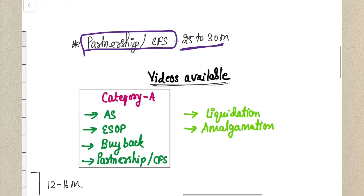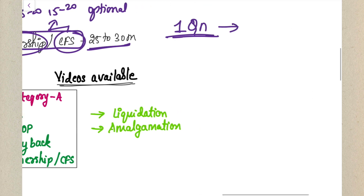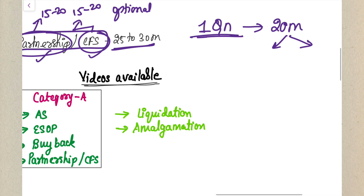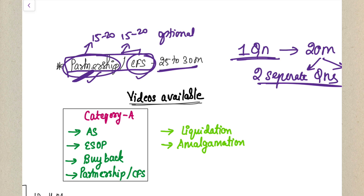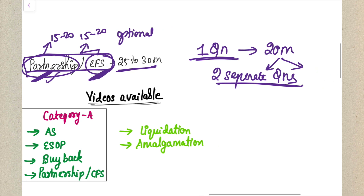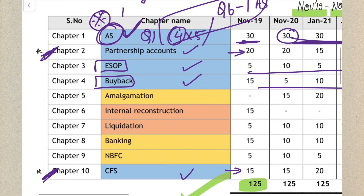Partnership and CFS together come for around 25 to 30 marks minimum. Since you have an optional question pattern and each question is worth around 20 marks maximum, Partnership and CFS cannot come as a single question - they will come as two separate questions. So even if you prepare only one of them, you can leave the other as your optional question.